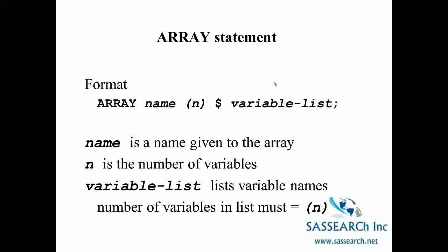And those variables can be new variables that you plan on creating, or they can be variables that are already on your data set. And most importantly, the list of variables that you give must equal the number that's in the parentheses. So if you say that there are going to be 10 variables in your array, you need to include a list of 10 variables in the array statement.